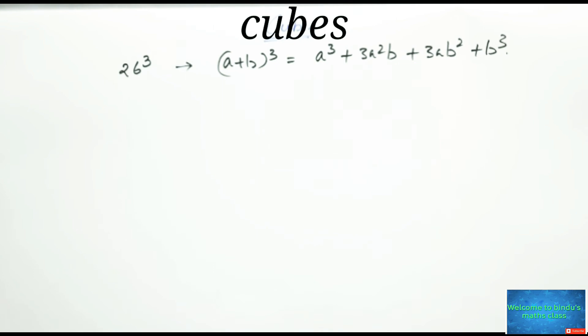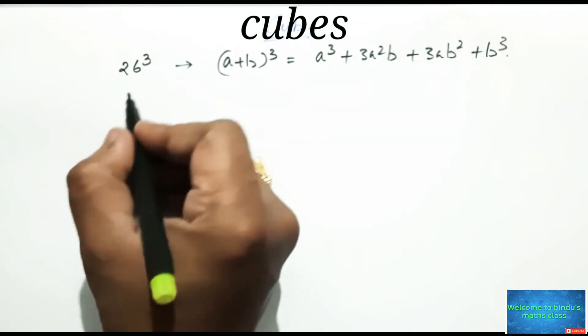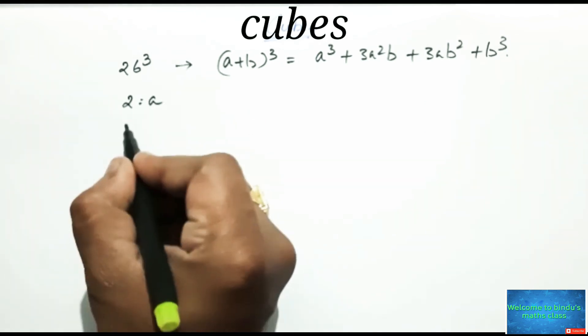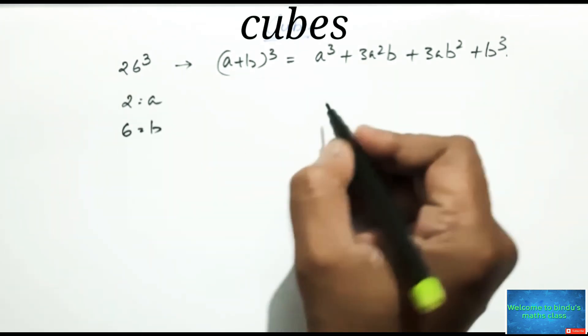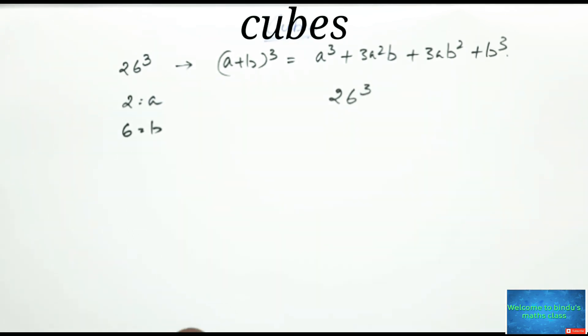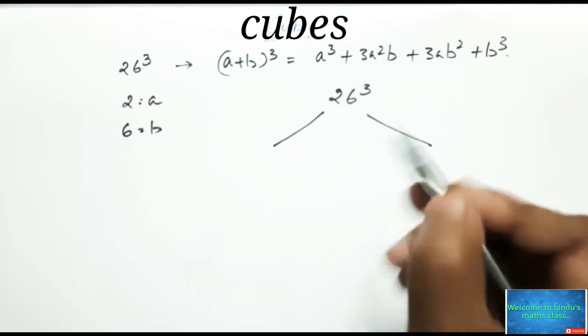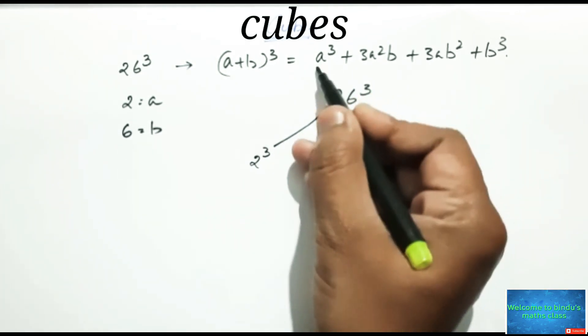Let us assume this 26 cube, so 2 is a and 6 is b. Here see how can we do this, let us write 26 cube like this. By doing so you know 2 cube which means a cube.